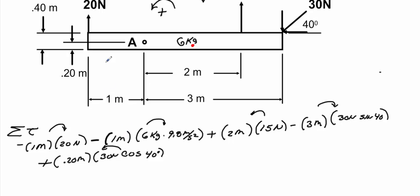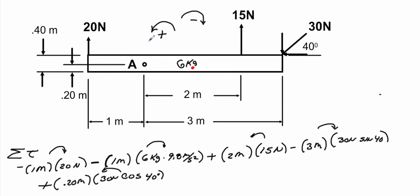Now we'll just go back and verify. The 20 is going to make it go clockwise, so that's correct. The mass times the 9.8 is also going to make it go back this way, so that's negative. The 15 is making it rotate counterclockwise, that's going to be positive which we have here. 30 times the sine of 40 is going to make it want to rotate clockwise, so that's negative. And 30 times the cosine of 40 is going to make it go counterclockwise, so it's positive.